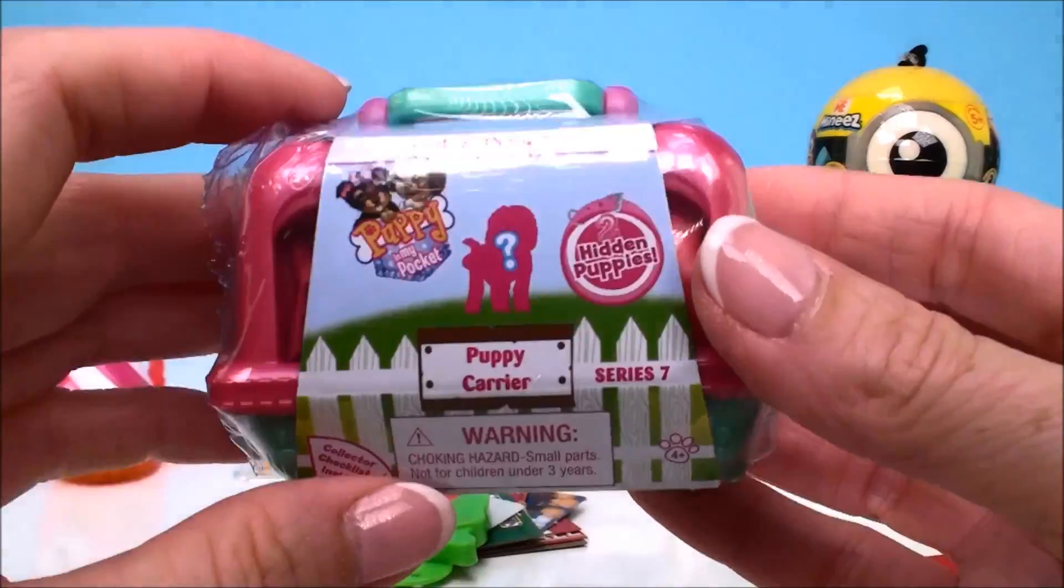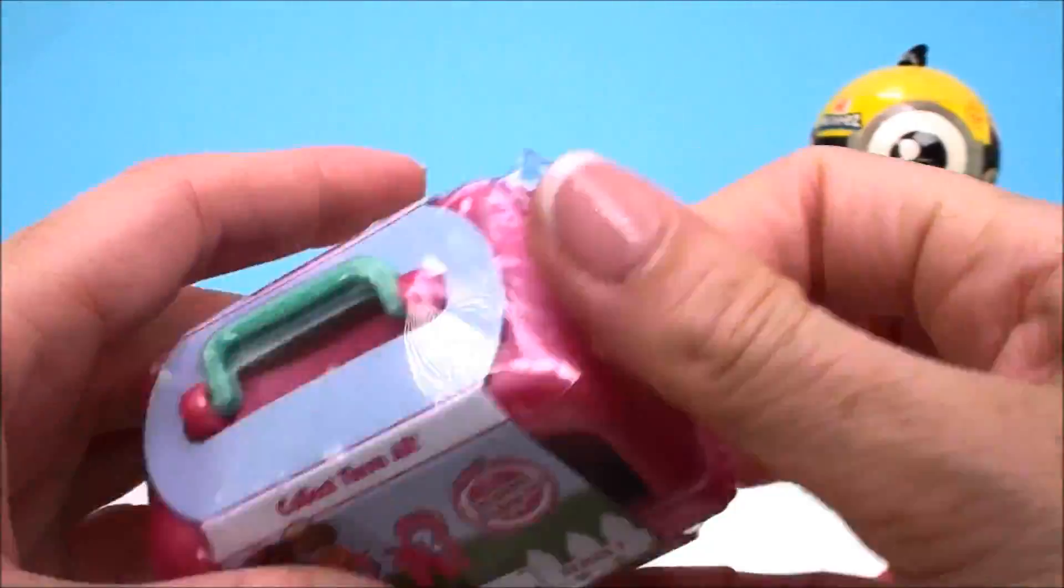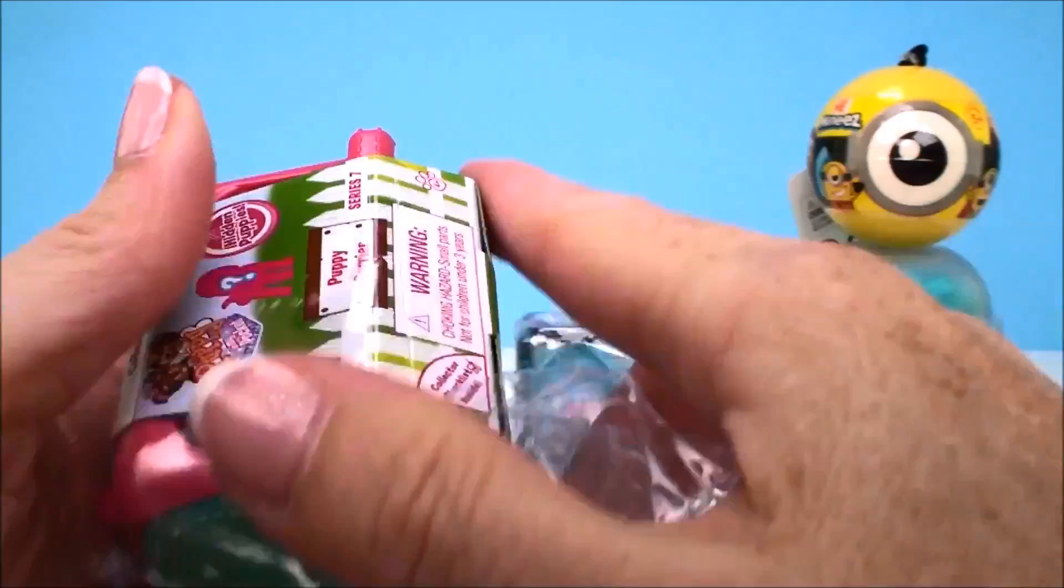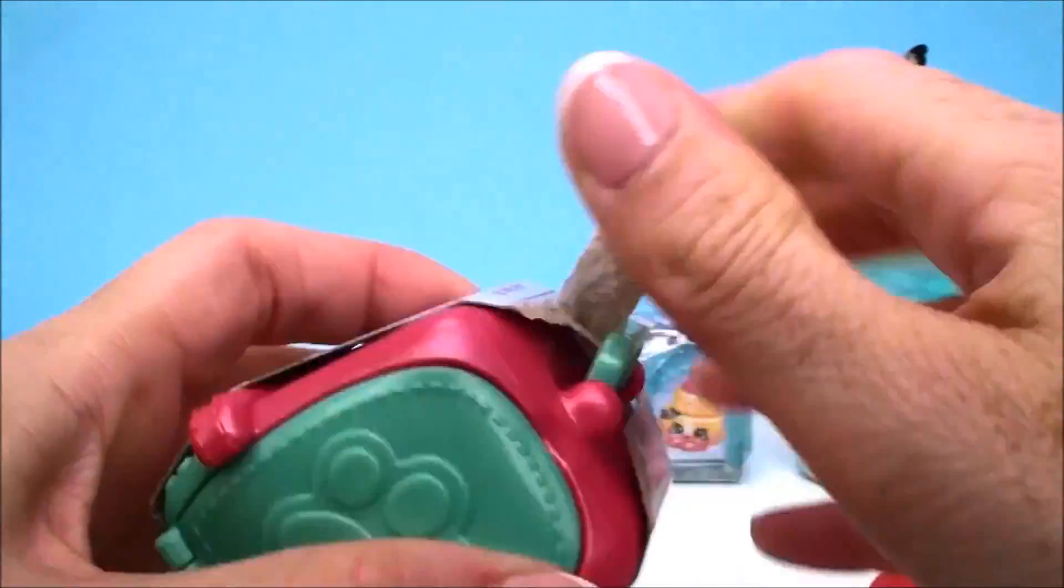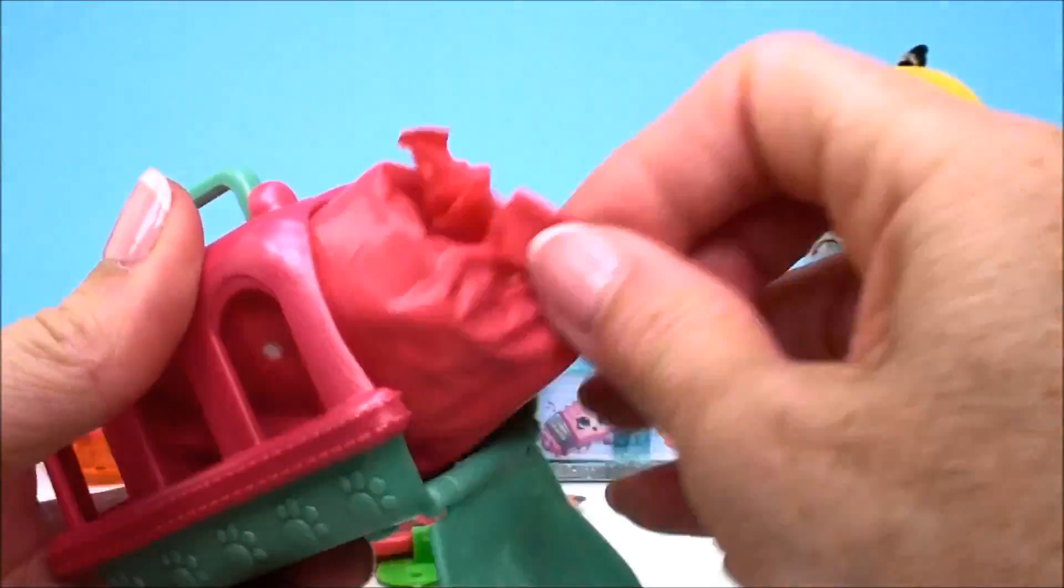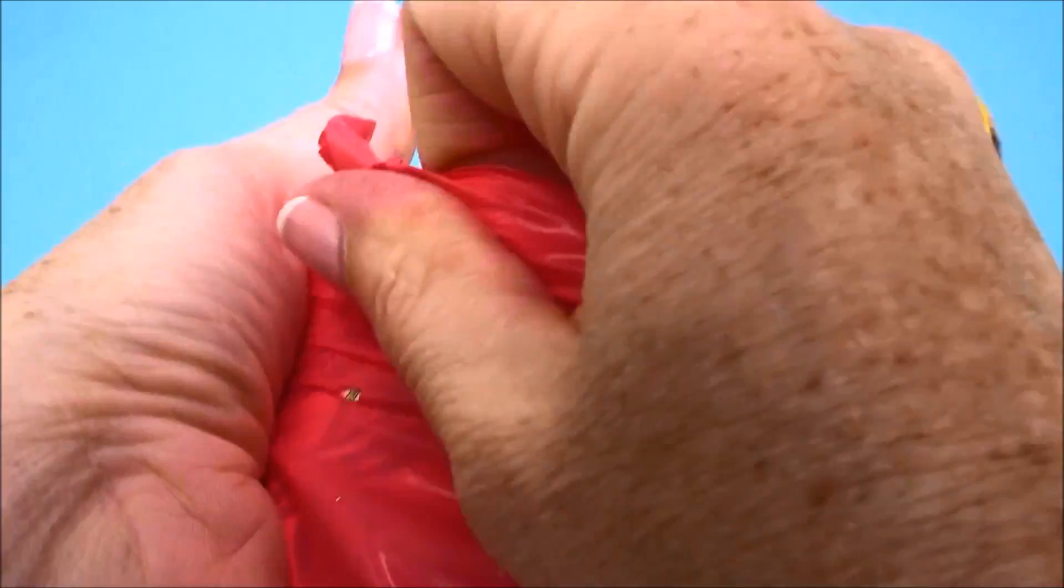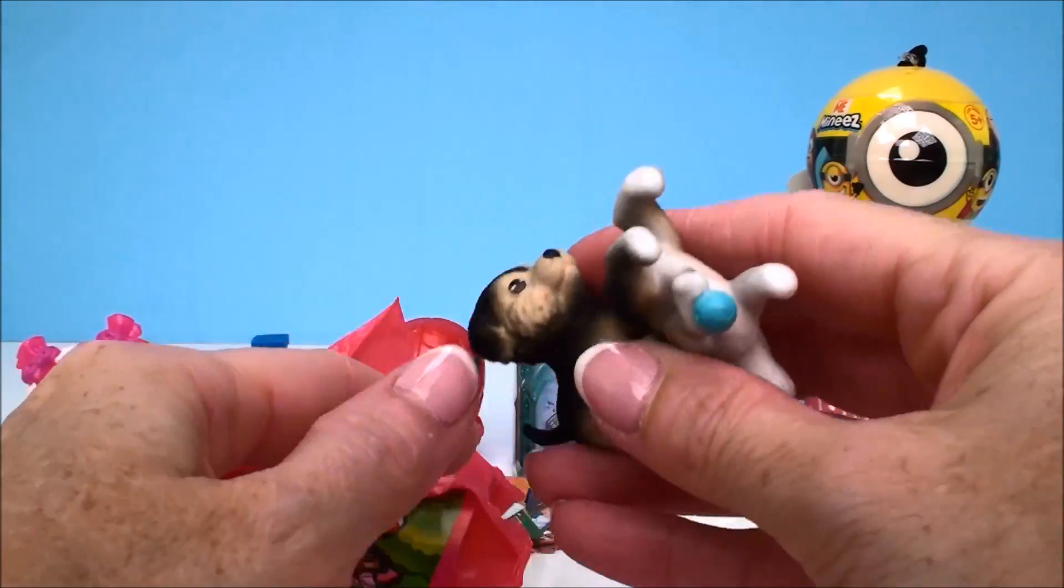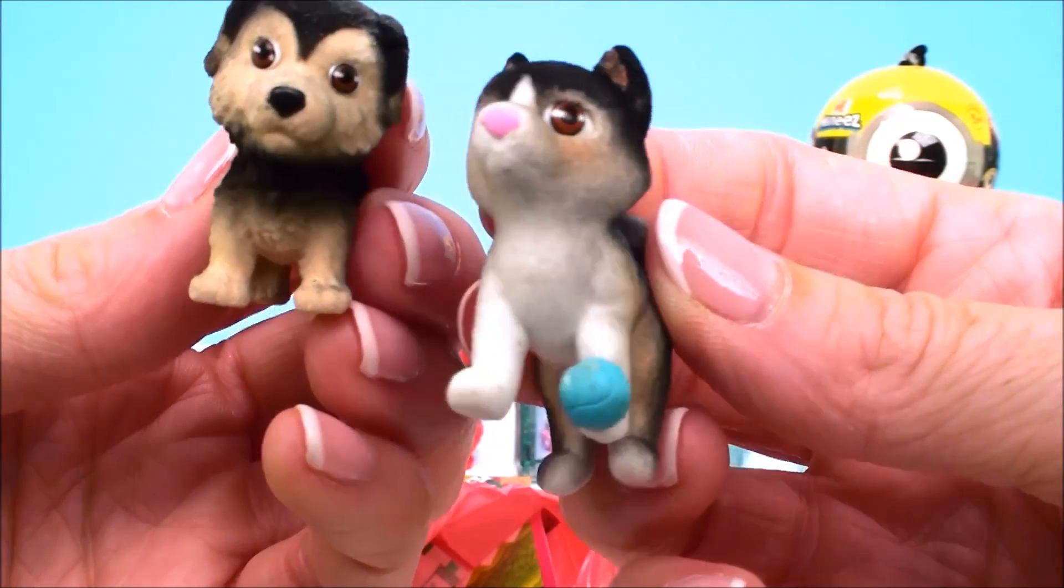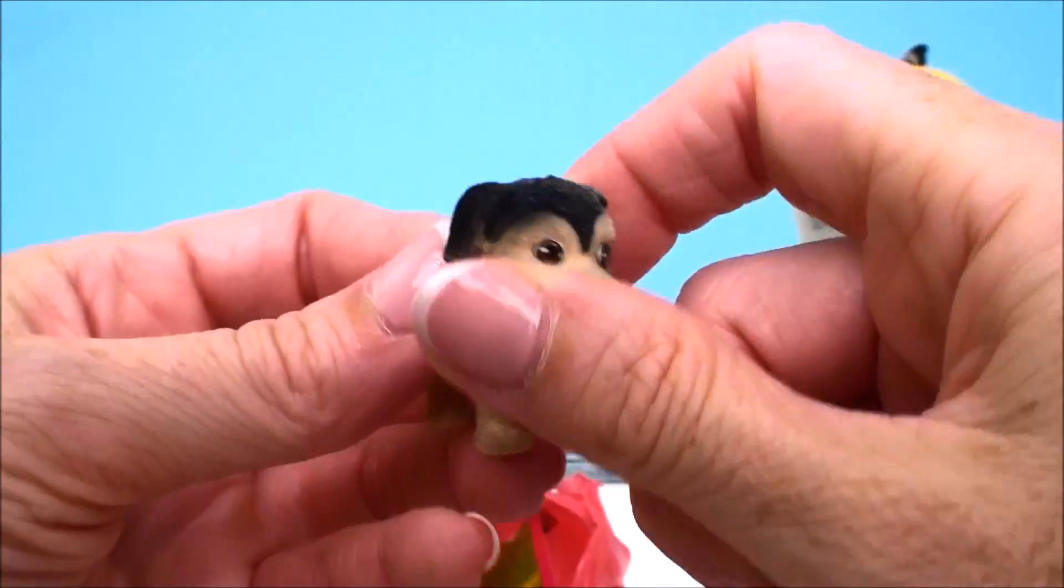And next we have this really cute puppy carrier. This is from Puppy in My Pocket. This is a series seven already. I can't believe there's already been seven releases. Cute little carrier, right? A little doggy carrier. And inside you get not one but two super cute puppies. Oh my goodness. I love this one has a little ball to play with. And that little pink nose. Super cute. And look at this guy too. He is a cutie too.